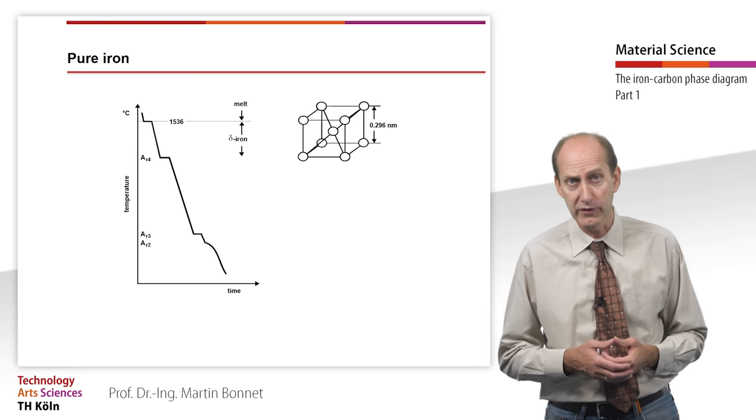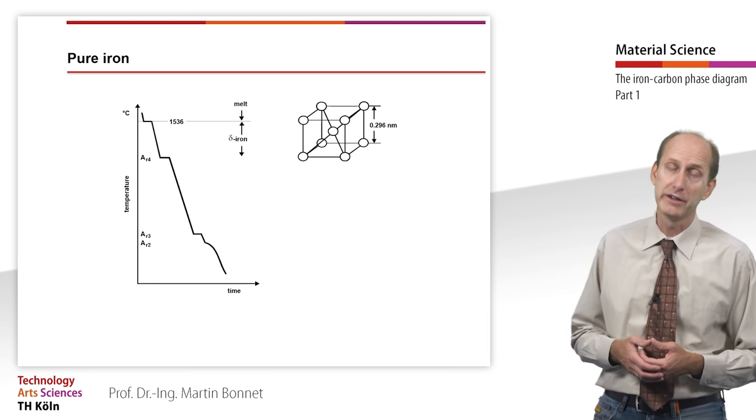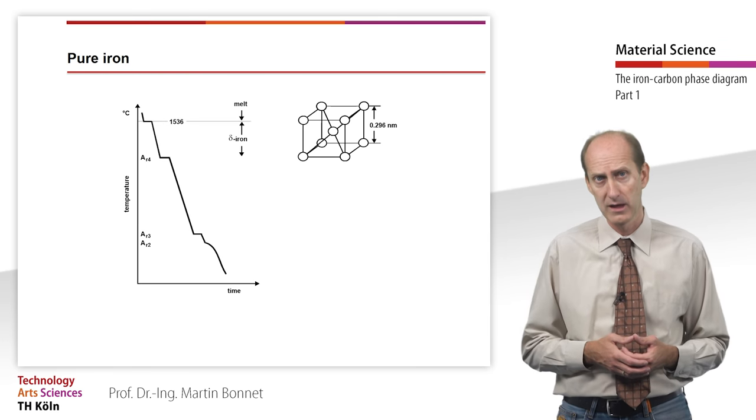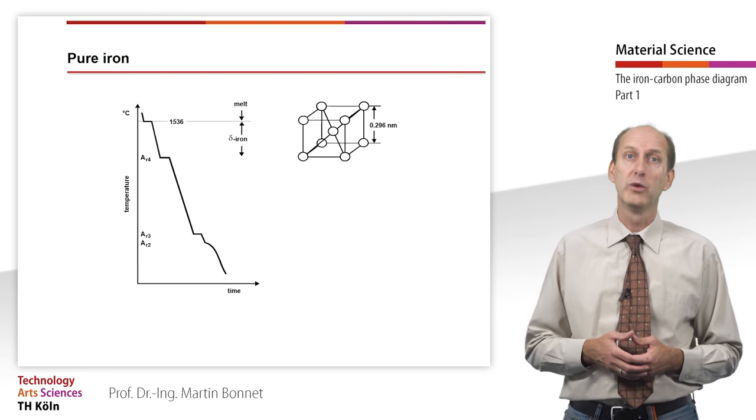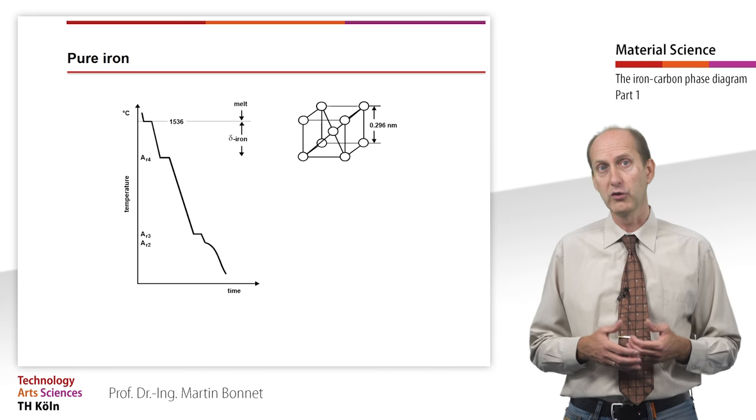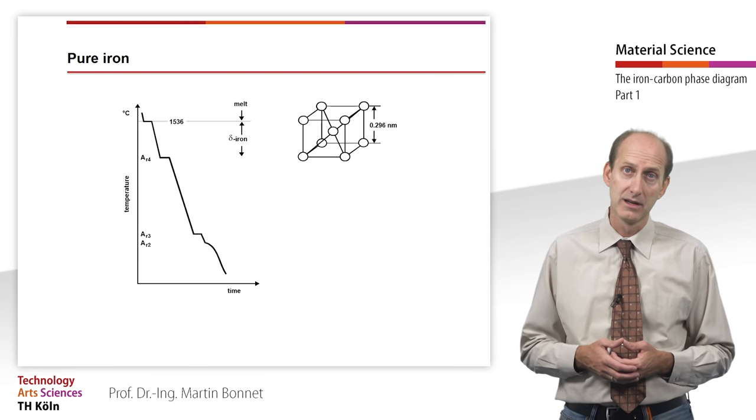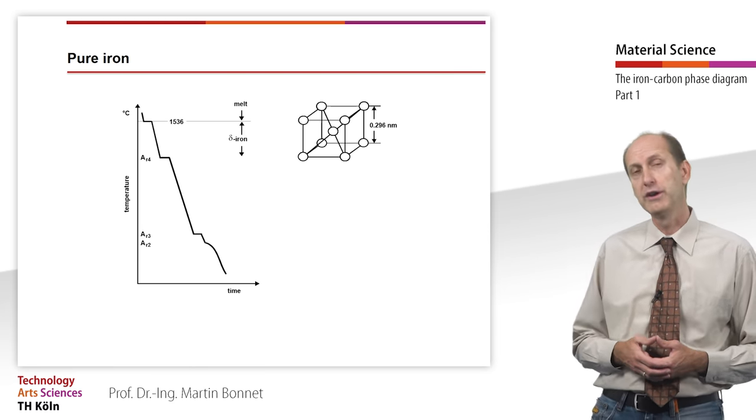Pure iron solidifies at 1536 degrees Celsius, forming crystals with a body-centered cubic lattice, the so-called delta iron. Here the first arrest point occurs.